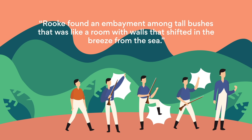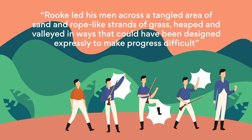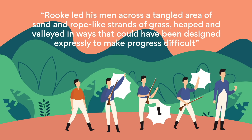'Rook found an embayment among tall bushes that was like a room with walls that shifted in the breeze from the sea.' This simile shows Rook feels a sense of belonging amongst nature, whereas the men rely on man-made items when resting. In conjunction with this, his gravitation towards nature divides Rook, our protagonist, from the remainder of his crew and reminds us of his betrayal to the men in his own values and beliefs.